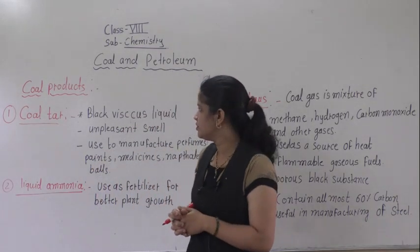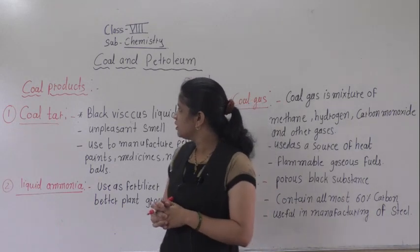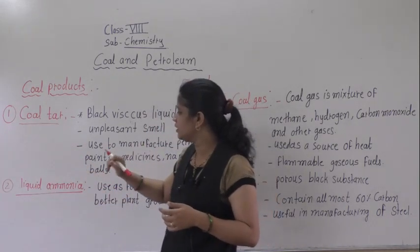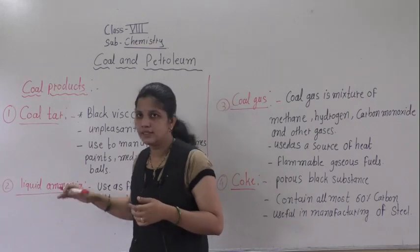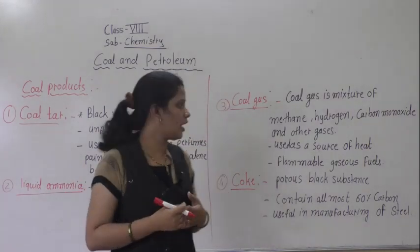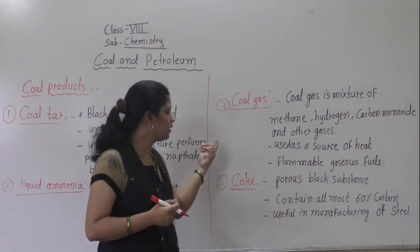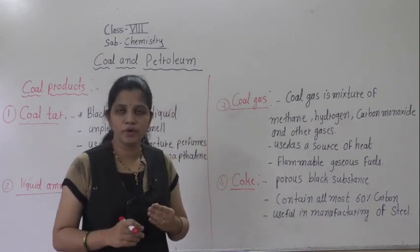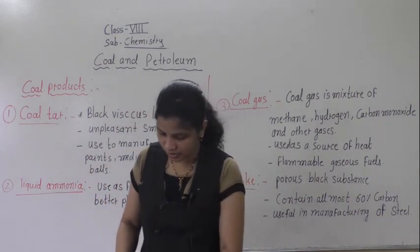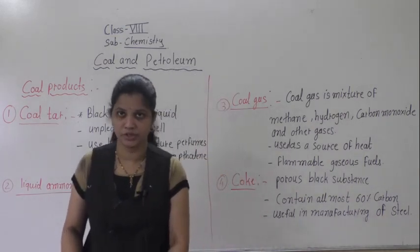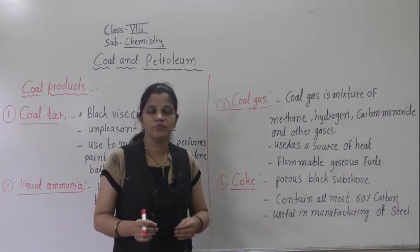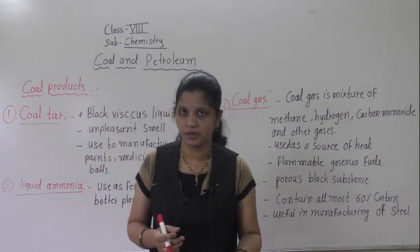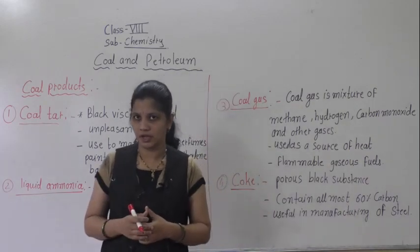The first product is coal tar. The second one formed is liquid ammonia. Third one is coal gas, and fourth is coke. So these four products are formed by the destructive distillation of coal. Now we will see what are the uses of all these products.